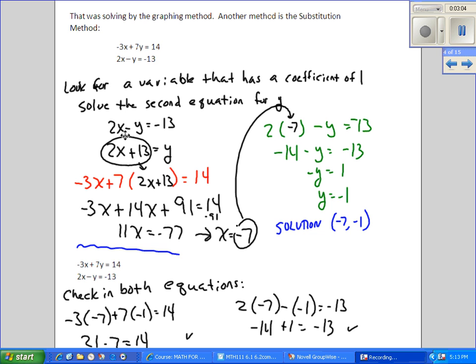So I brought the y over, brought the 13 over, y equals 2x plus 13. And then I'm going to substitute that expression for y into the first equation, replacing the y with the 2x plus 13. That gives me one equation with only one type of variable. I can solve for x.